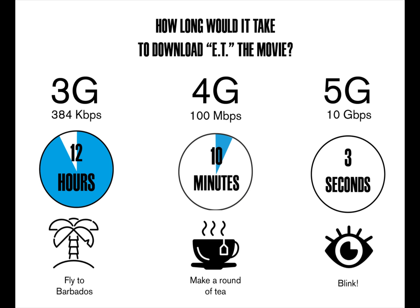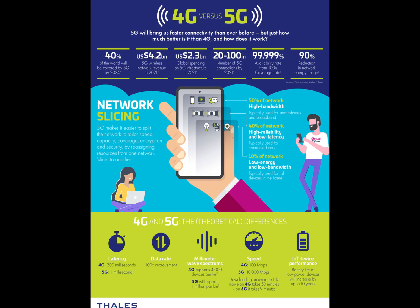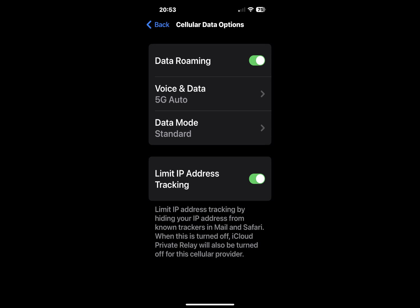5G is on by default with compatible iPhones, but won't be used permanently even if available. It uses what Apple calls Smart Data Mode, which automatically tries to strike the best balance between 5G, LTE, and battery life. Apple said it even takes into account your data plan. The default settings are optimized for battery life and data usage based on your data plan.